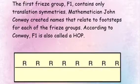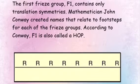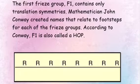The first freeze group, F1, contains only translation symmetries. Mathematician John Conway created names that relate to footsteps for each of the freeze groups. According to Conway, F1 is also called a hop.